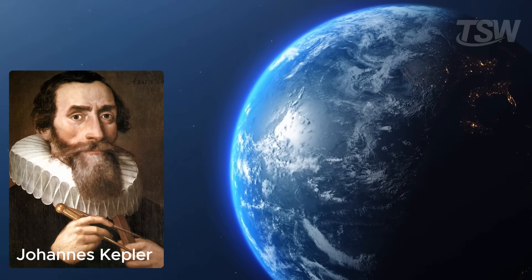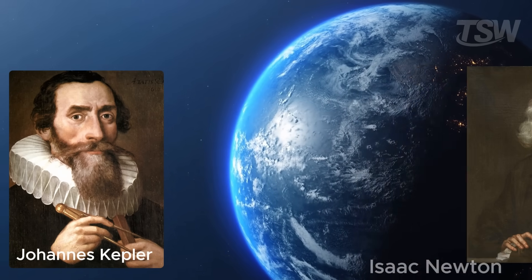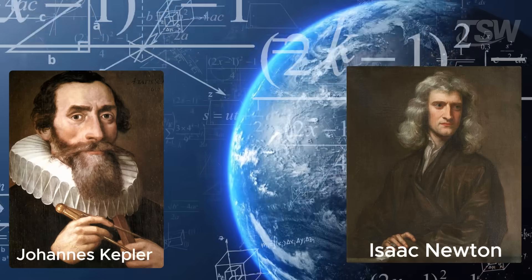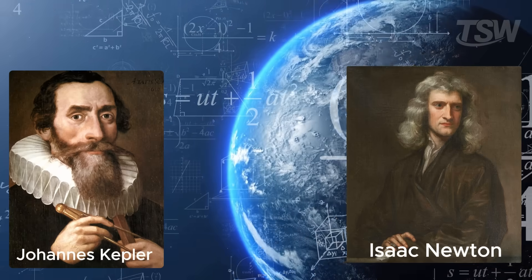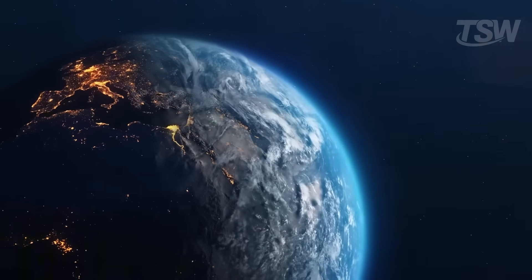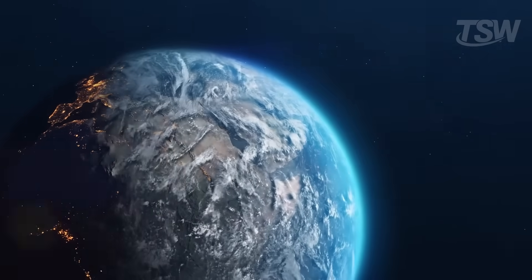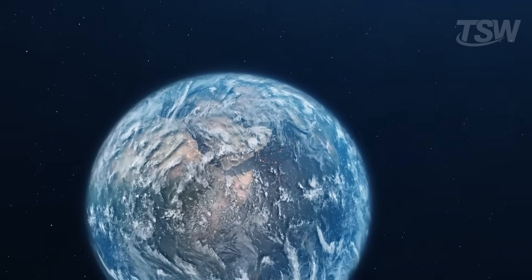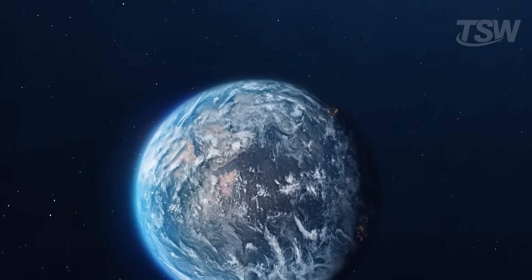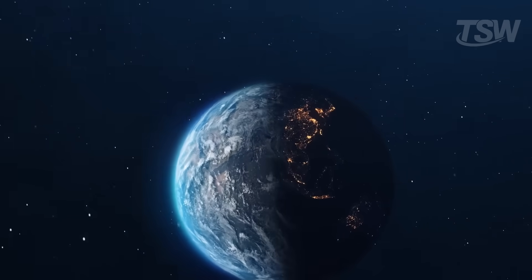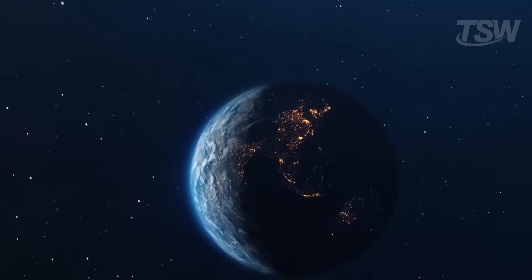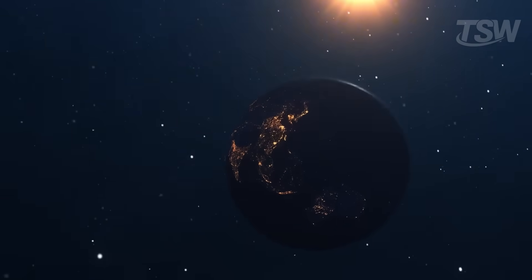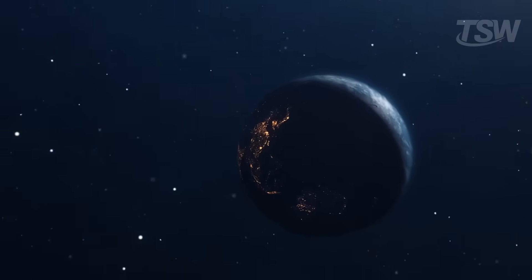He used Kepler's laws of planetary motion and Newton's principles of universal gravitation to develop extremely precise mathematical calculations, predicting how orbital changes would affect insolation in different parts of Earth. It was a bold approach combining astronomy, mathematics, and physics — and only decades later did it receive the recognition it deserved.